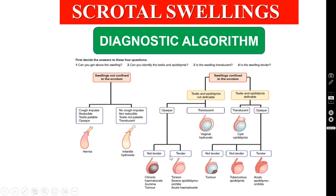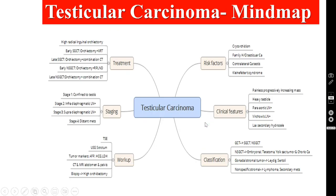So in the not-tender category, there are several other possibilities: testicular tumor, gumma, or even chronic hematocele. These are the differential diagnoses for this category. The most important thing — the mind map for testicular carcinoma.